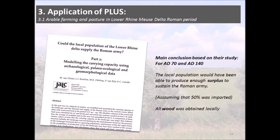We applied this model for the Lower Rhine region by looking specifically at research presented by Marieke van Dinter and Laura Kooistra. They focused on the Roman period from AD 40 to AD 140 and asked whether the local population of the Lower Rhine Delta could supply the Roman army. Their main conclusion is that the local population would have been able to produce enough surplus to sustain the Roman army. However, they made a big assumption that 50% of cereals were imported. We focused on checking whether this figure is feasible and whether the landscape can produce such an amount. The second conclusion was that all wood was obtained locally, and we examined that hypothesis as well.